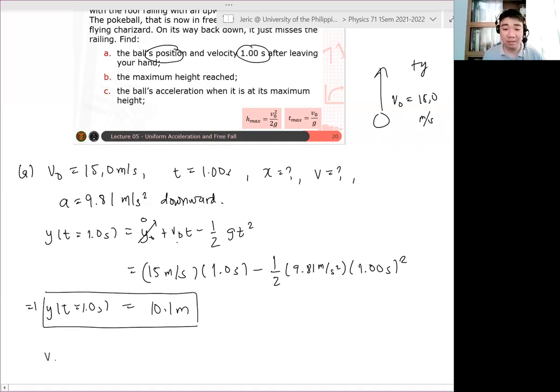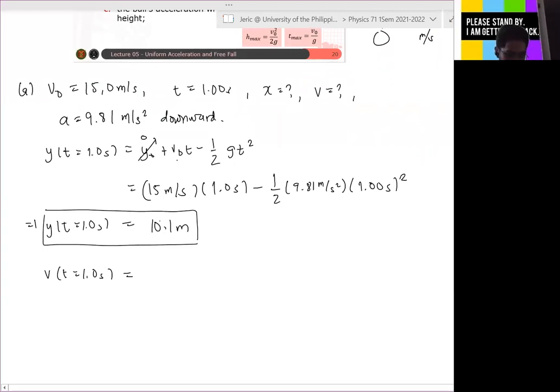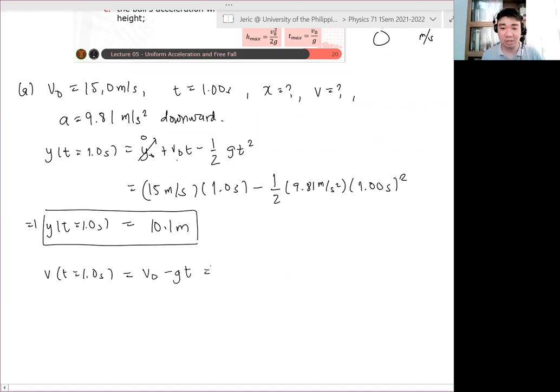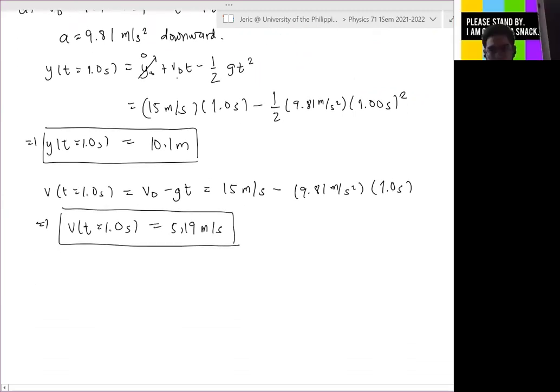Okay. What about the velocity at T equals one second? Paano mahanapin yan? Velocity time. Yes. We will use the velocity time equation which is V naught minus G T which is just equal to 15 meters per second minus 9.81 meters per second squared multiplied by one second. And we get here V at T equals 1.0 second is about 5.19 meters per second. Okay. Questions? May tanong? None so far. None.